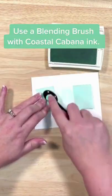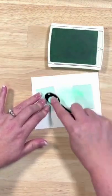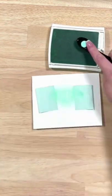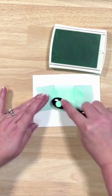We're going to bring in some blending brushes. I'm using Coastal Cabana ink for this one. We're going to start with our ink on the post-it note and bring it into the middle of our card base. Use the top piece to tell you if you need more color or not.